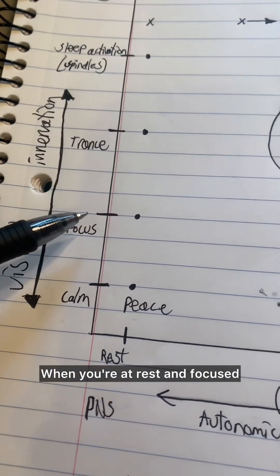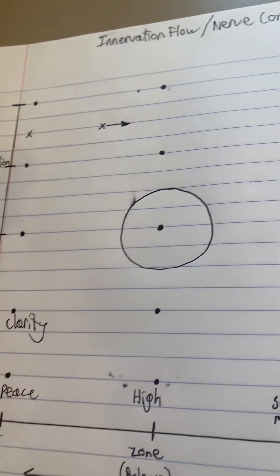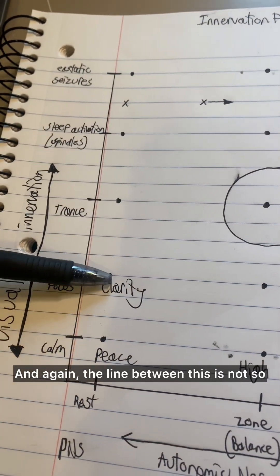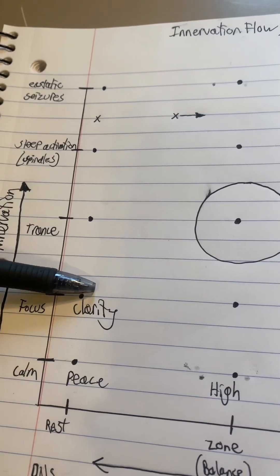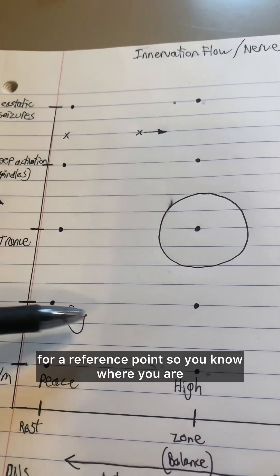When you're at rest and focused, over here you're in a state of clarity. And again, the line between this is not so defined as being points, but we can see as the nerves increase, you enter into something we can label just for a reference point so you know where you are.